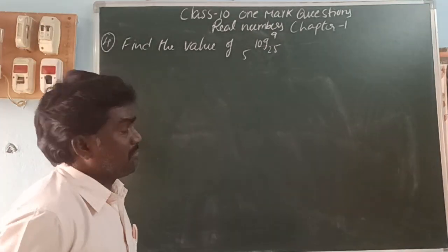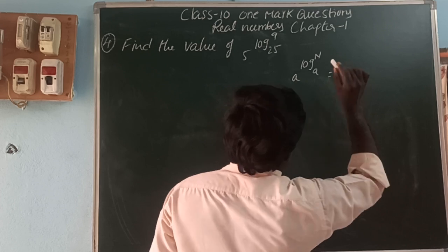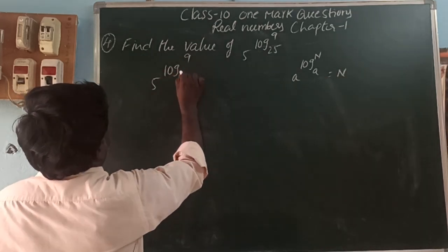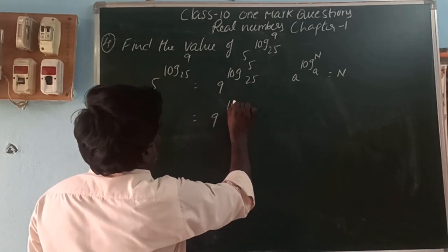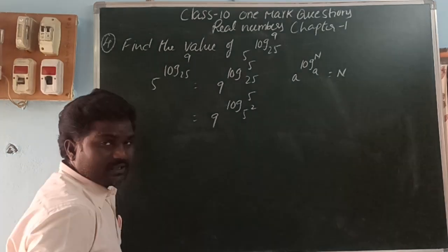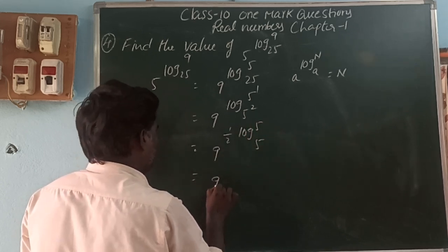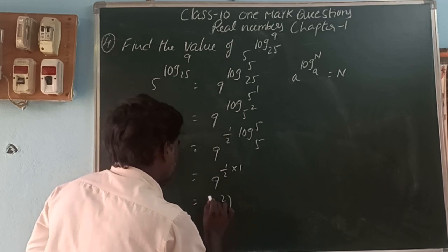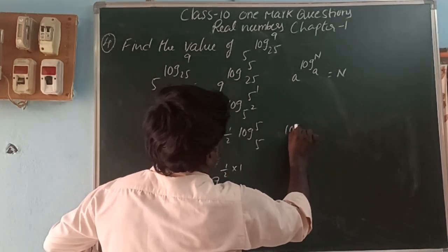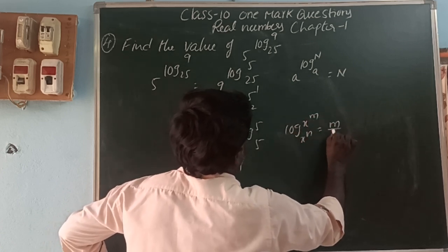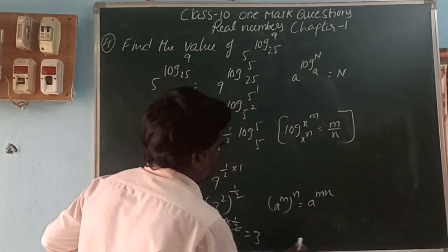Find the value of 5^(log 9, base 25). Using the formula: a^(log n base a) = n. Here 5^(log 9 base 25) — since 25 = 5², we write the base as 5², so log 5 base 25 = log 5 base 5² = 1/2. Therefore this is 9^(1/2 · log 5 base 5) = 9^(1/2 · 1) = 9^(1/2). Now 9 = 3², so 3²^(1/2) = 3^(2·1/2) = 3.